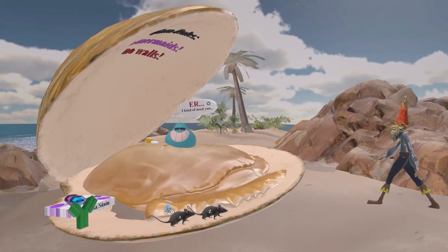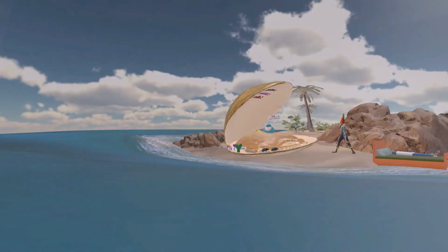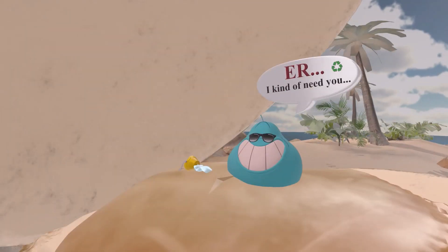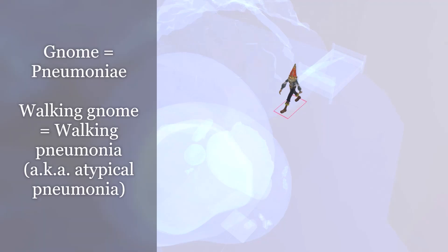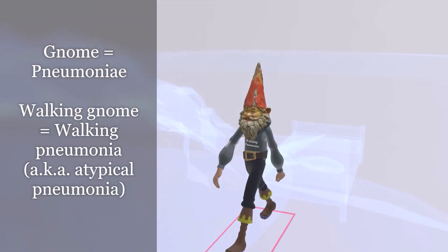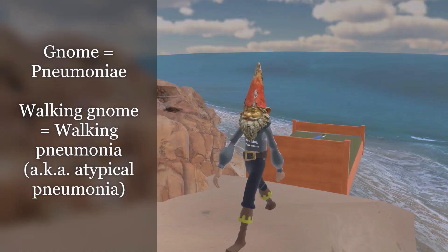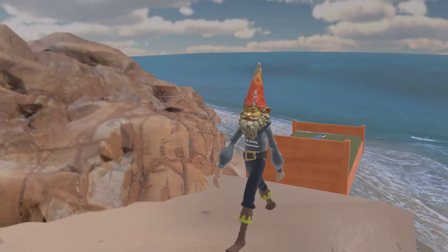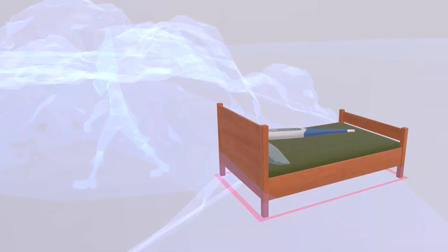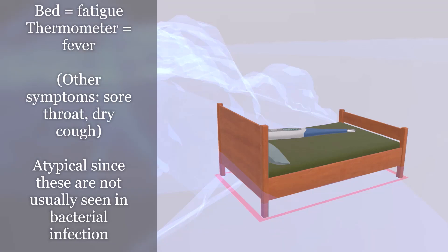Welcome to our scene on Chlamydia pneumoniae, represented by this gnome over here that is walking, reminding us of walking pneumonia. Chlamydia can cause walking pneumonia, also known as atypical pneumonia, which is a more mild form. He came off of a bed, which reminds us of the fatigue associated with walking pneumonia, and the thermometer reminds us of the fever. Other nonspecific symptoms may include sore throat and a dry hacking cough, which is why it's also known as atypical pneumonia.